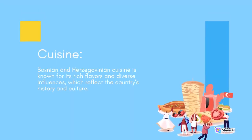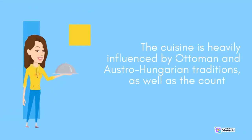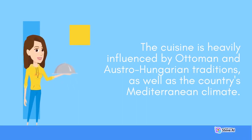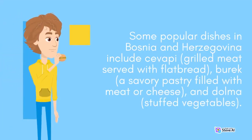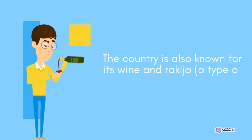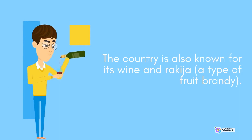Bosnian and Herzegovinian cuisine is known for its rich flavors and diverse influences, which reflect the country's history and culture. The cuisine is heavily influenced by Ottoman and Austro-Hungarian traditions, as well as the country's Mediterranean climate. Popular dishes include ćevapi (grilled meat served with flatbread), burek (a savory pastry filled with meat or cheese), and dolma (stuffed vegetables). The country is also known for its wine and rakija, a type of fruit brandy.